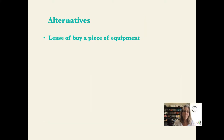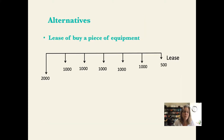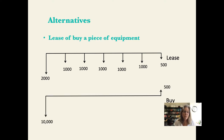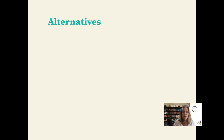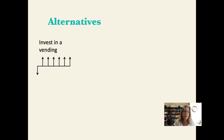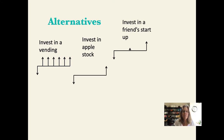Another example is lease versus buy of equipment. If you lease a piece of equipment — like a car — you put a small amount down, then have payments over time and a payment at the end that's often different. If you purchase the equipment, you have a larger down payment and then a residual value at the end. Another example is various investment alternatives: you can invest in a vending machine, Apple stock, or a startup.